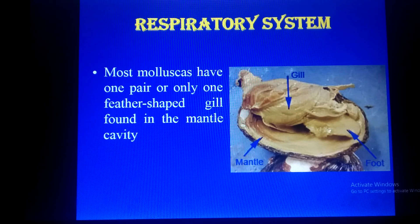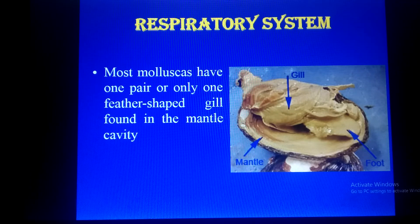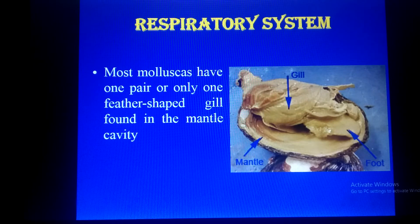For the respiratory system, they respire through their general body surface and also have a special organ: gills. They use their skin as well, and they have one pair — or only one feather-shaped gill — which is found in the mantle cavity. The concept of the mantle cavity and shell is: the shell is the outermost tough, hard part; inside the shell is the mantle layer; and inside that, the gills are present, which the mollusca use for respiration.